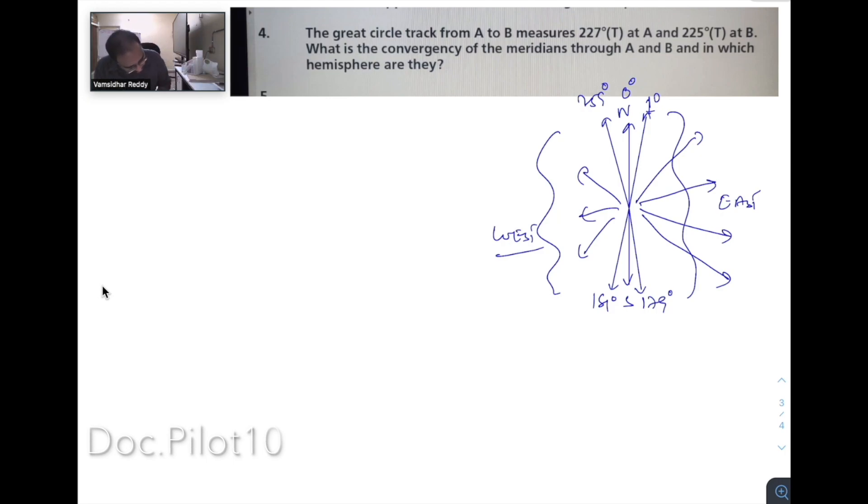North East India. If your track is in Northern Hemisphere, if you are going East, it increases. That's why North East India. If your track is in Northern Hemisphere and if you are going West, the Great Circle track will decrease.